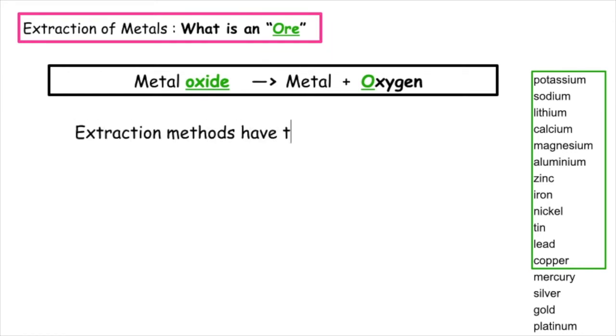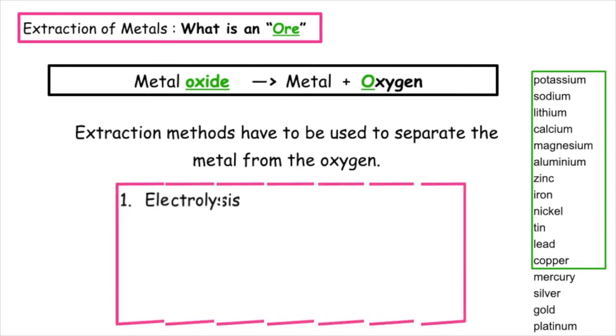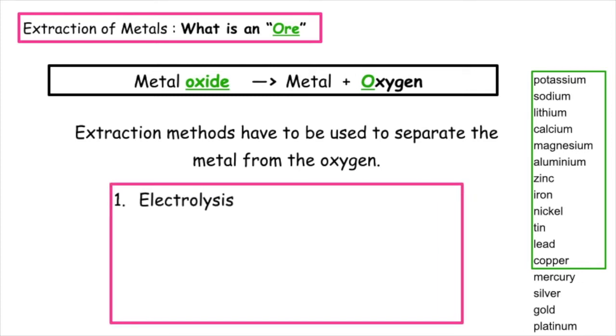Extraction methods have to be used to separate the metal from the oxygen in the metal oxides. There are three different techniques to extract the metal. The first one is electrolysis, the second heating with carbon or carbon monoxide, and the third is using heat alone.